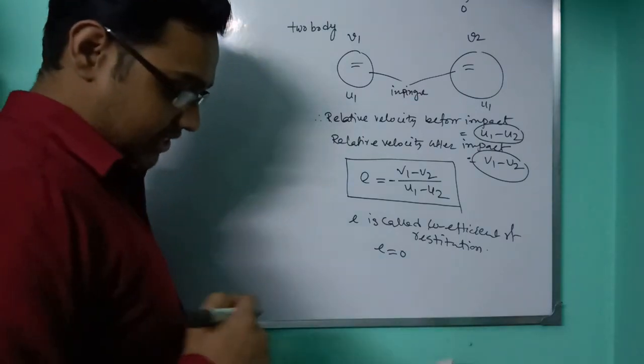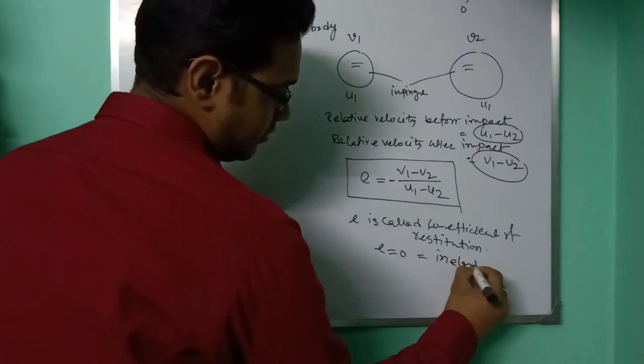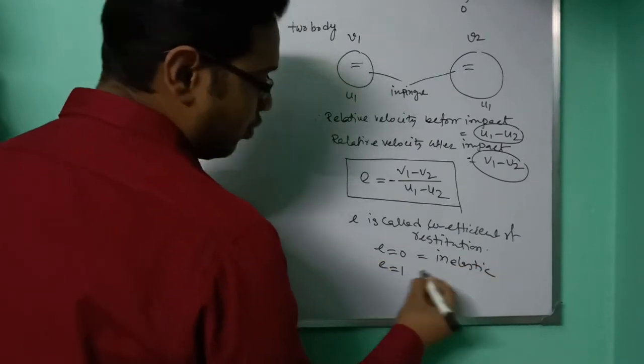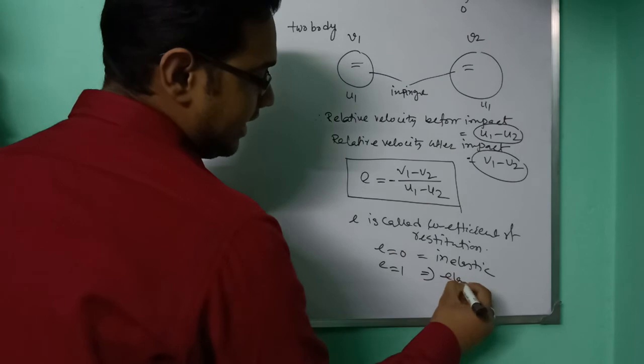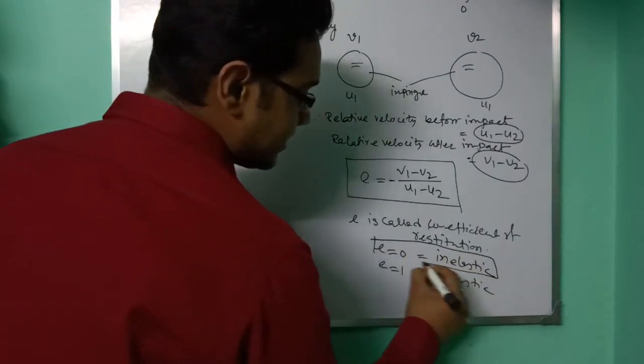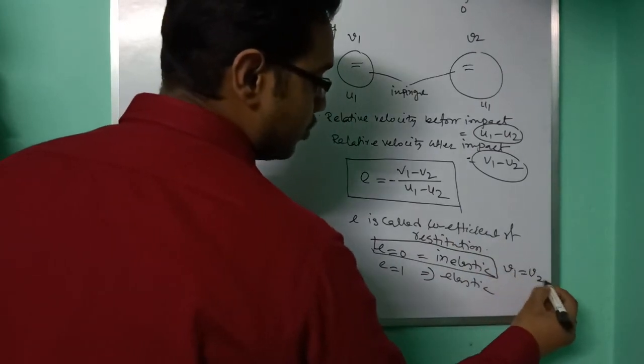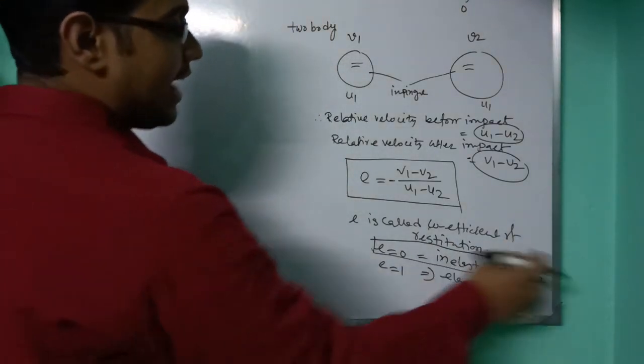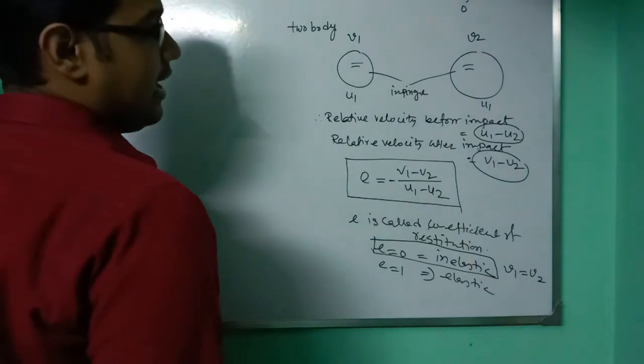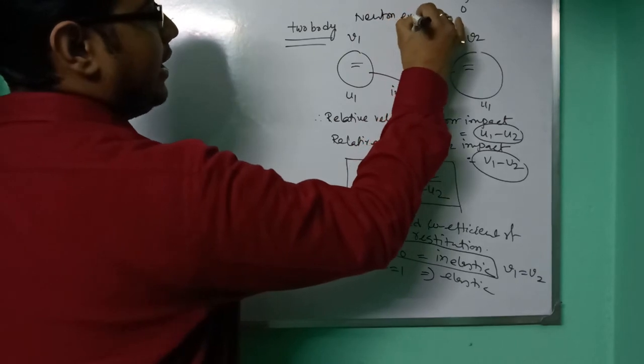When e equals 0, it is inelastic bodies. When e equals 1, it is elastic body. In the inelastic case, the final velocity v1 equals v2, and they transfer as a single body. This theory is called Newton's experimental law of impact.